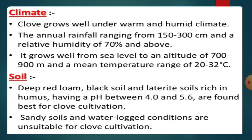Deep red loamy soil, black soil, and laterite soil rich in humus, having a pH between 4 to 5.6, are found best for clove cultivation. Water-logged conditions are unsuitable for clove cultivation.